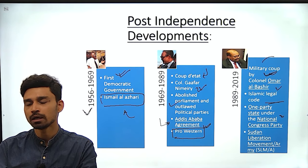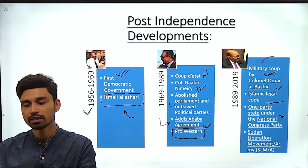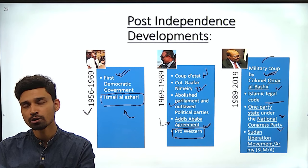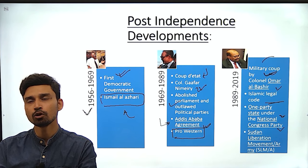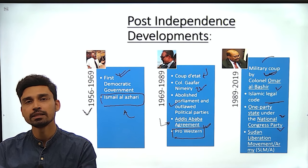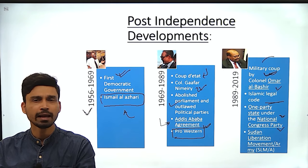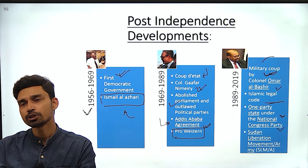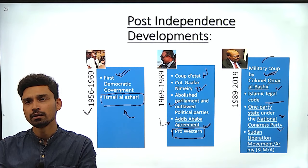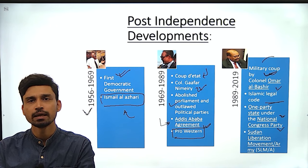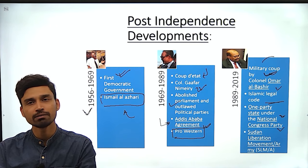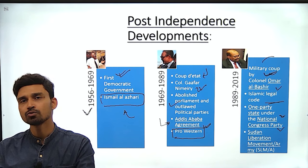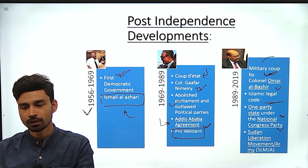After Omar al-Bashir occupied power, he put Sudan under a one-party state ruled by the National Congress Party. During his reign, traditional Islamic fundamentalists including Osama bin Laden were invited to Sudan, and he started building his base there. This support for jihadists caused the West to become very angry, and the United States at one point declared Sudan a state sponsor of terror, causing Sudan to become an international pariah.